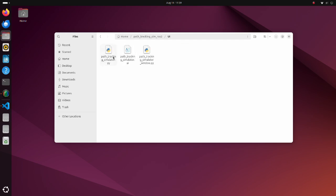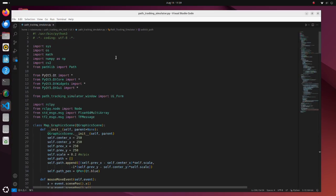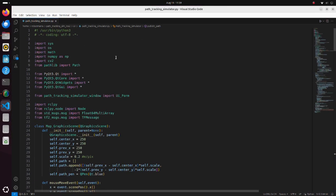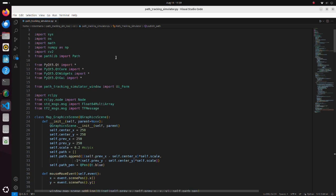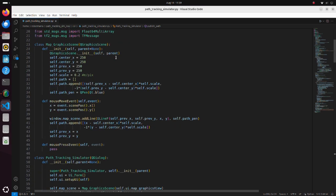Let's see UI side of the program. Open the path tracking simulator script. The program is similar to the previous tutorial but we have made several modifications. In the map graphic scene class, in the mouse move event function, as user moves the mouse holding the left button, the line which represents path is drawn and path points are added to the array.